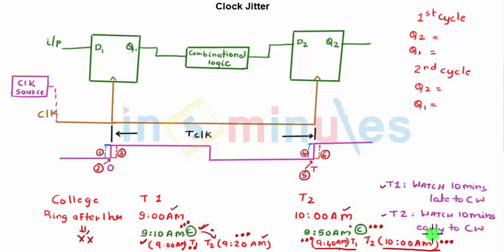What we understood here was teacher one's watch was late by 10 minutes and teacher two's watch was early by 10 minutes compared to the college watch, which gave very little time to the first teacher to complete because she was expecting one hour but she got only 40 minutes and hence she could not do justice to her part of the syllabus. A similar situation happens in digital circuits as well.